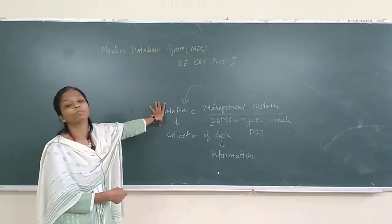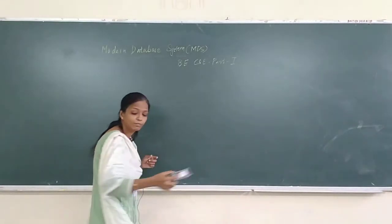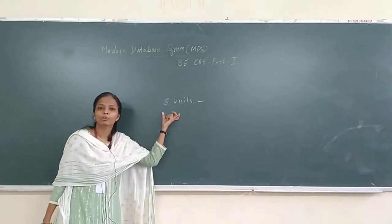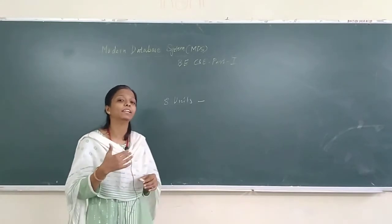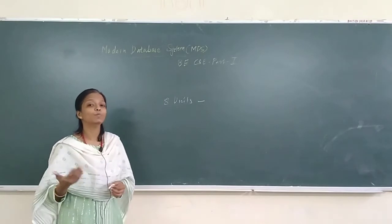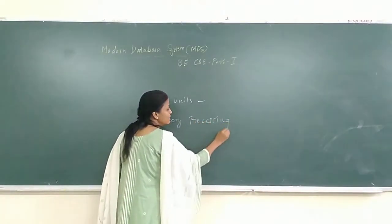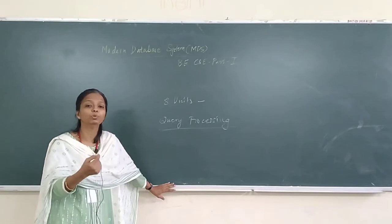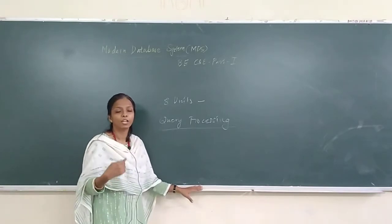Modern Database System is an extension of Database Management System. The subject consists of 8 chapters or 8 units. Section 1 consists of 4 units and section 2 consists of 4 units. Section 1 explains how the database is handled in a more modern and secure way, and what different architectures are used to handle the database. Next we move on to query processing — you store the database, fire some queries, give commands to the computer, and in return the computer gives you the result.